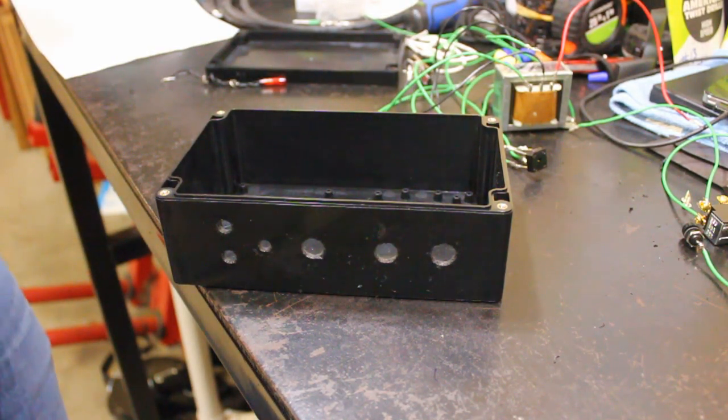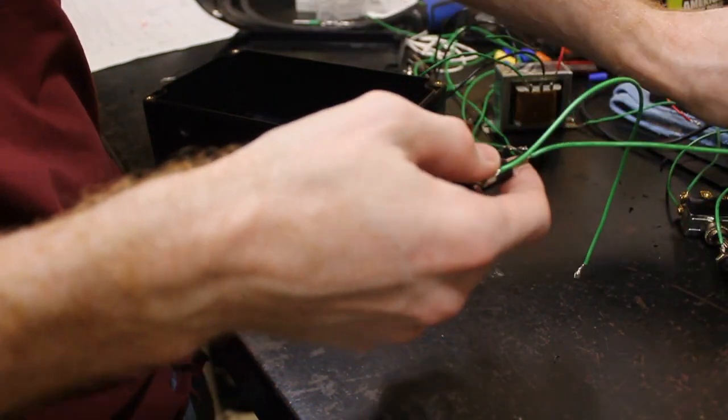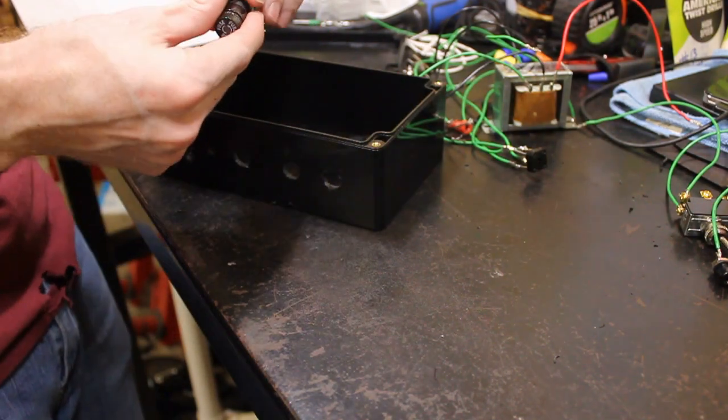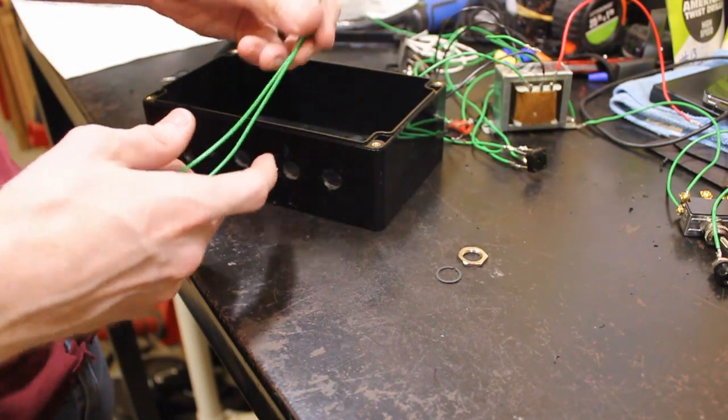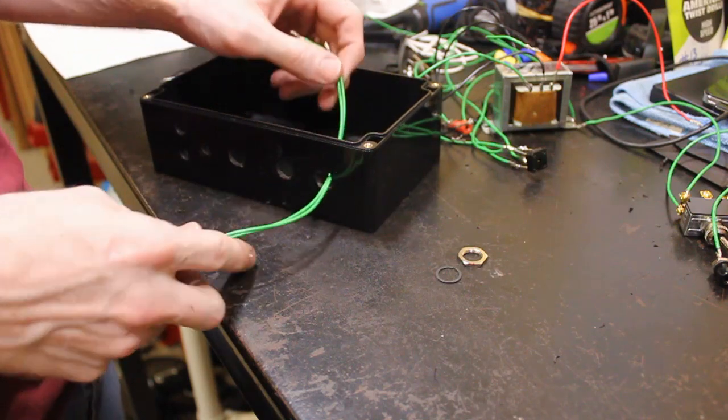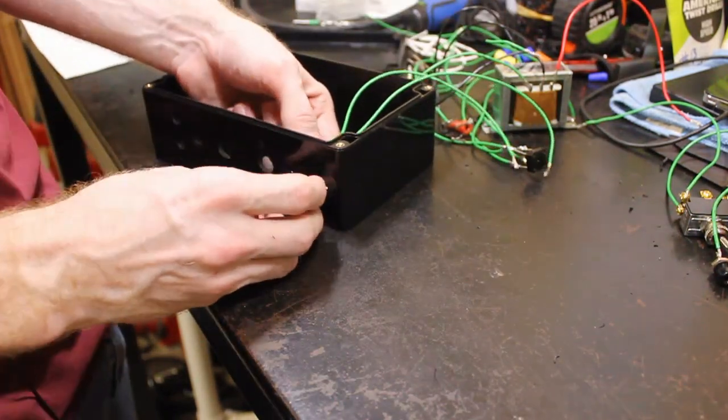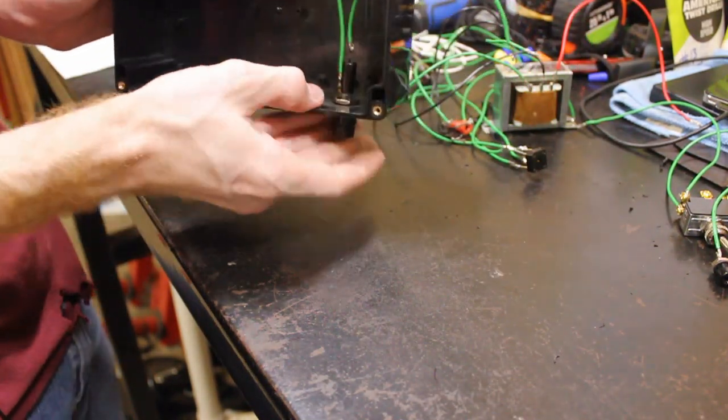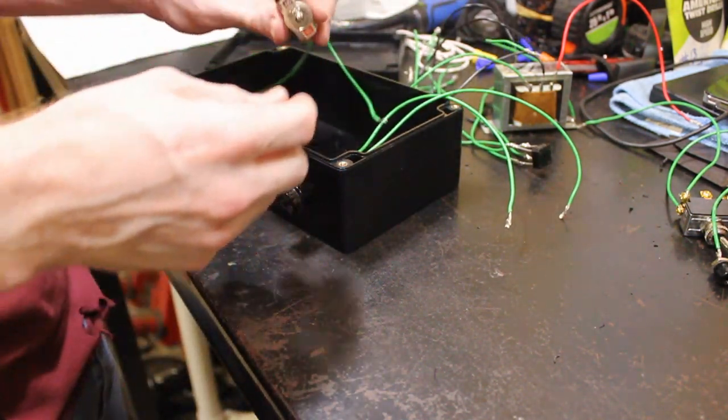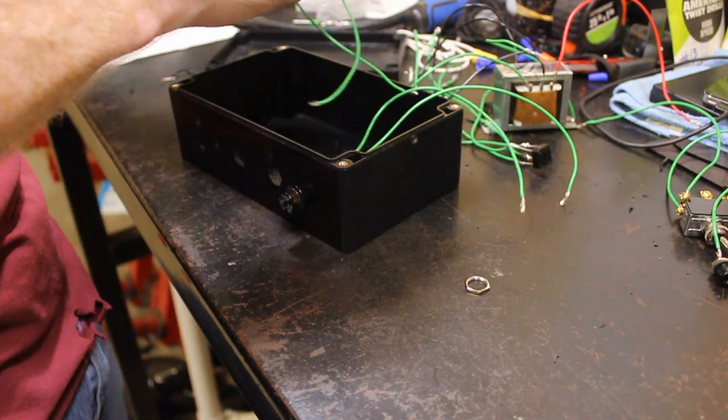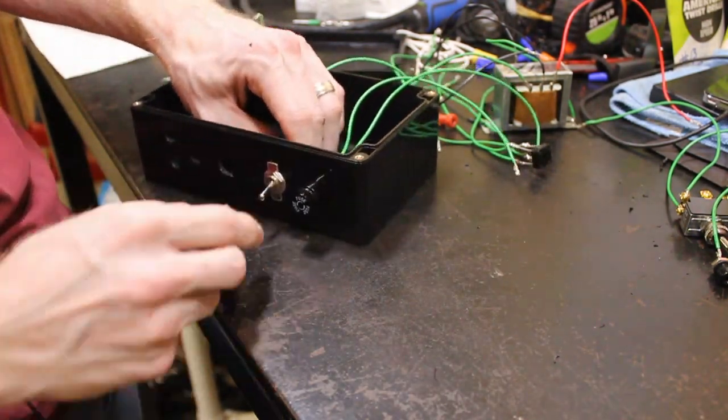Now that we have our holes drilled we're going to start putting some of these components in. Like I said earlier I pre-wired all these components so that this would be a pretty quick process here. But go ahead and get all your components soldered up and wired together and this will be quick for you. So the first thing we're going to do is put in our fuse holder into this half inch hole that we just drilled. So you just tighten this down back here.